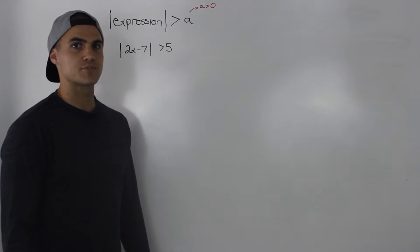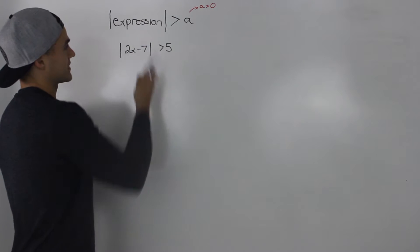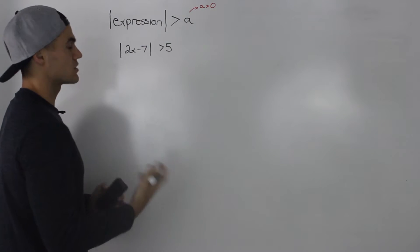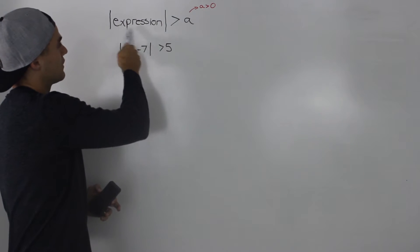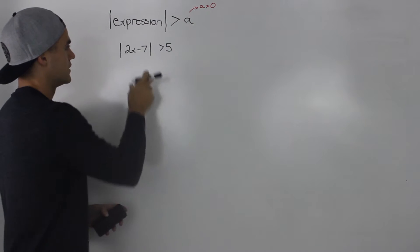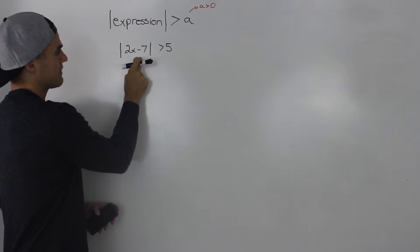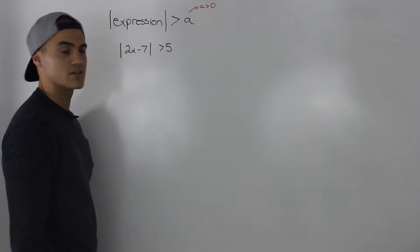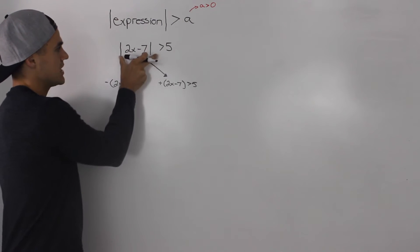Sometimes when you're dealing with absolute value inequalities, you'll be dealing with expressions instead of just the variable x. So let's go through a couple of cases. If the absolute value of an expression is greater than a value a, when a is positive — for example, when is the absolute value of 2x minus 7 greater than 5? How do we solve this inequality?